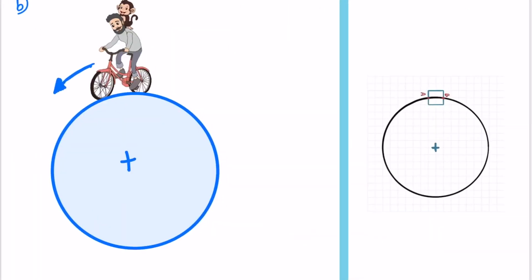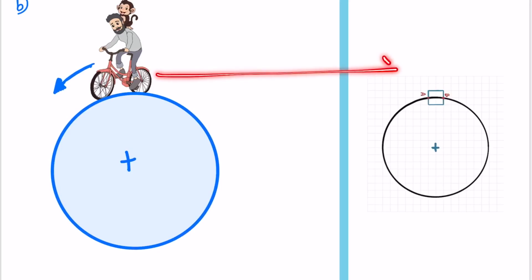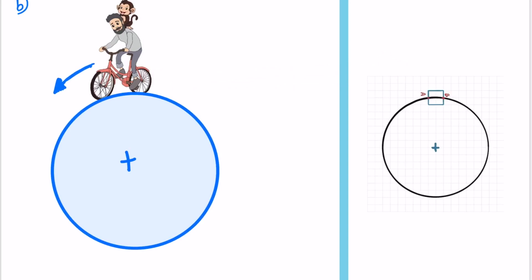Option B: A monkey sitting on top of a man cycling on a circular track. If this is a circular motion, comparing it to our earlier analysis, the two points are equivalent. So this is also considered a point object. Option B is also correct.